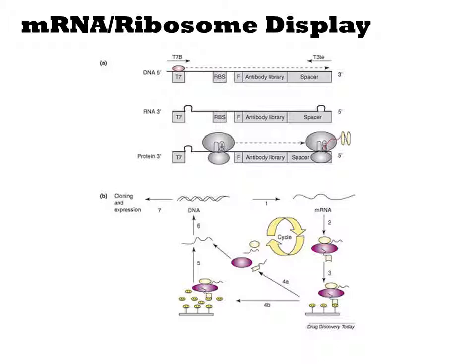Ribosome display is the most prevalent of these in vitro methods. You start with a DNA encoding your gene of interest under a T7 promoter that lacks a stop codon. You transcribe these DNAs in vitro with T7 RNA polymerase to generate an mRNA population, then put this into an in vitro translation mix. Ribosomes will stall when they reach the end of the mRNA, forming a complex that links the nascent peptide to the mRNA. You can pan with these complexes just as you would in phage display. After selection, you reverse transcribe the mRNA to DNA, PCR, and then repeat until you see binding, and then you clone and sequence.